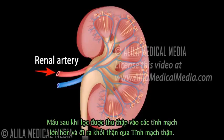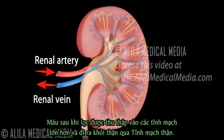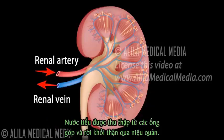The filtered blood is then collected into a series of larger veins and exits the kidney through the renal vein. The urine is collected in collecting ducts and leaves the kidney via the ureters.